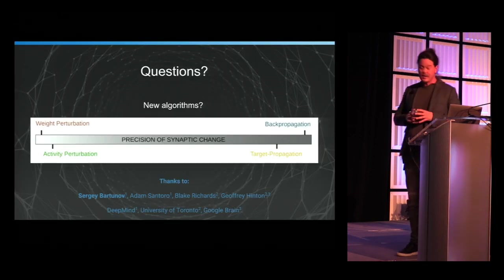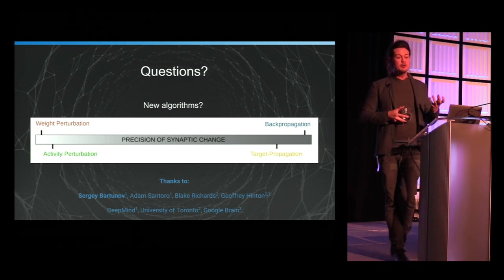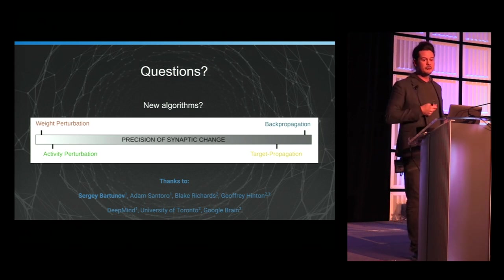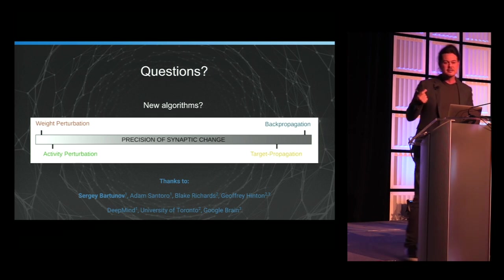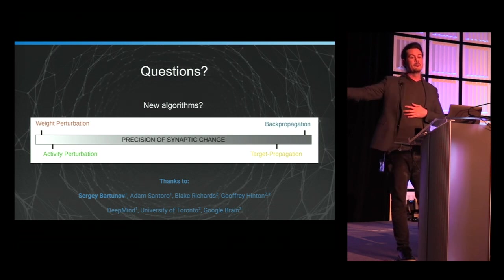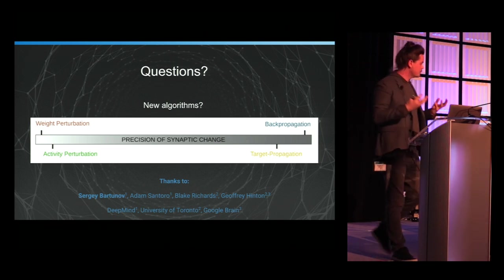The story is a bit simple and negative, but I think it's one that we need to tackle as a community if we think that deep learning algorithms have something to do with the brain. We need to be responsible and ask: does the algorithm I'm developing, where I've introduced biological constraints, actually still deliver the performance that was in some sense the whole point?